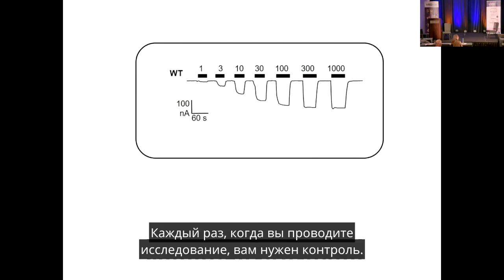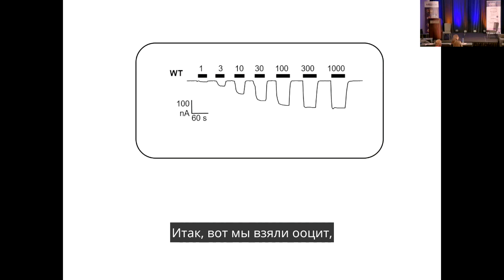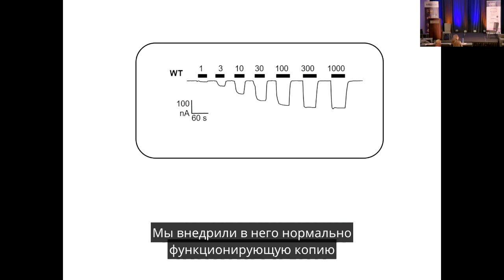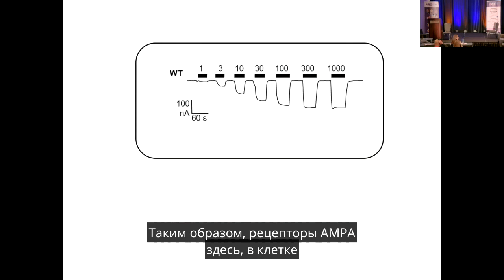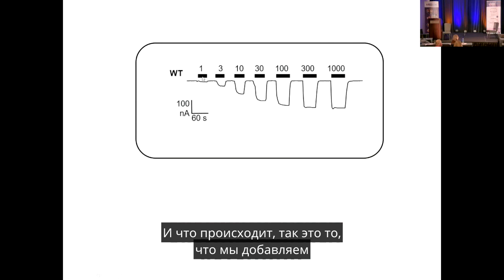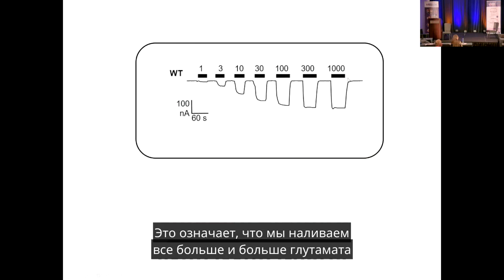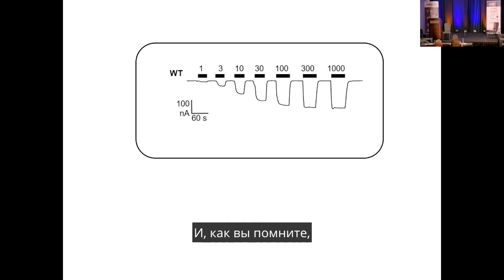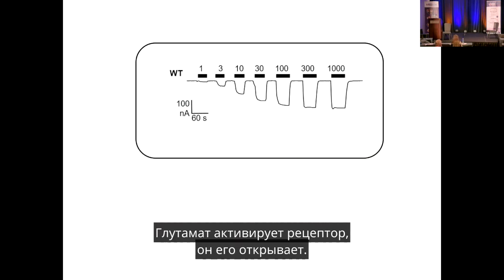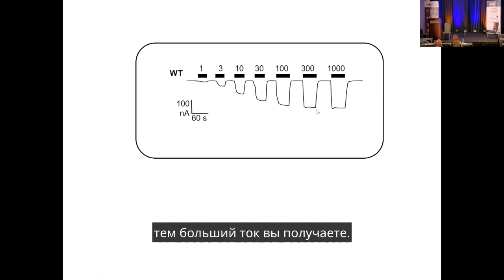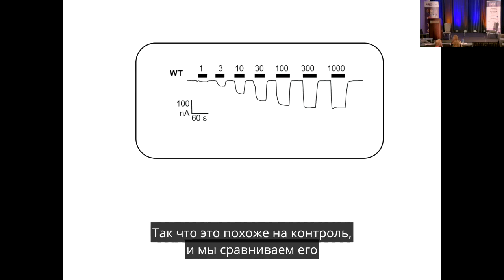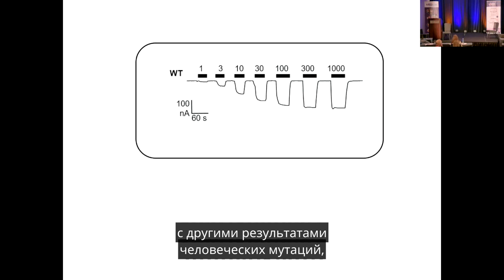As a control, oocytes expressing normal GRIA3 show increasing current with increasing glutamate concentration. These control currents are then compared with results from oocytes expressing human mutations. In their cohort of 25 patients with GRIA3-related disorders, 17 unique mutations were found. Three examples are shown: a mutation at position 609 that caused no detectable change in current and was deemed unlikely to be causative; a gain-of-function mutation at position 654 with markedly larger currents; and a loss-of-function mutation at position 776 with almost no current at all.